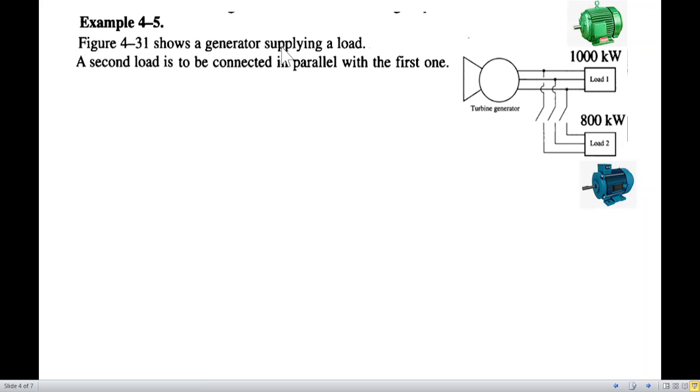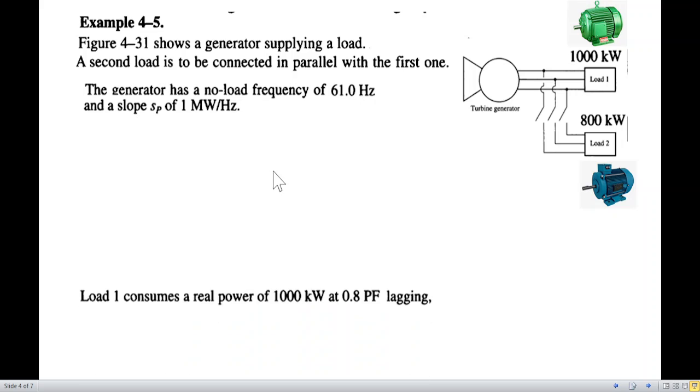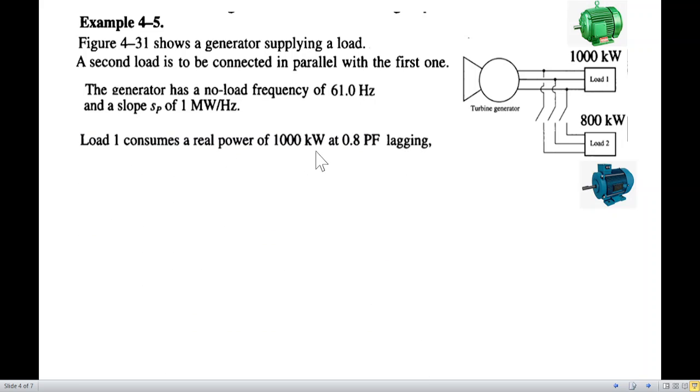Now, the question is figure 4-31 shows a generator supplying a load. So, this is the generator supplying a load of one kilowatt. A second load is to be connected in parallel with the first one. The generator has no load frequency of 61 hertz and a slope of 1 megawatt per hertz. Load one consumes the real power of 1000 kilowatt or one megawatt at 0.8 power factor lagging. And load two consumes a real power of 800 kilowatt at 0.707 power factor lagging.